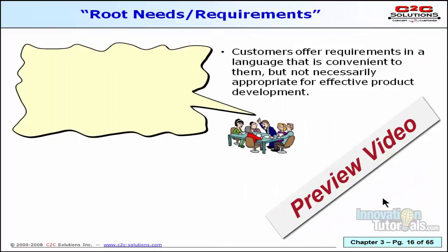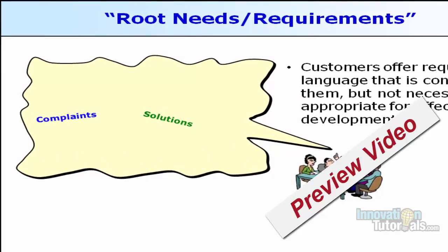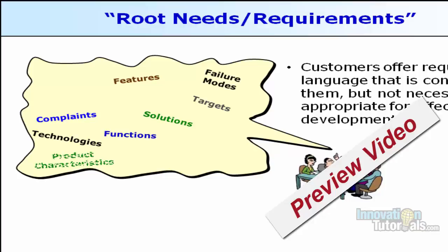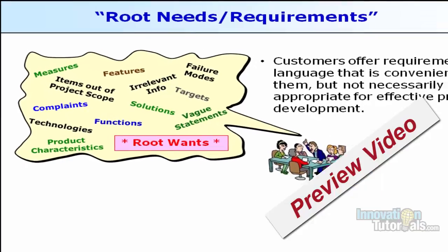One last piece of advice about developing customer needs: one of the goals is to get to a root need. When you talk to customers, they're going to give you all kinds of things — they'll talk about solutions, complain about things, give you features they want, performance goals or targets, technologies, functions, failure modes, product characteristics, information irrelevant to what you're trying to accomplish, items outside the scope, metrics, vague statements, and occasionally a root want, which is really what we want. We want to understand the fundamental need the customer has.